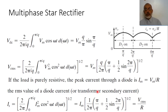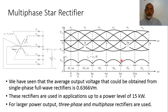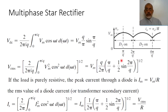This completes the analysis of the general multi-phase star rectifier. In the following video, we are going to study the specific case of the three-phase star rectifier, where Q equals 3.